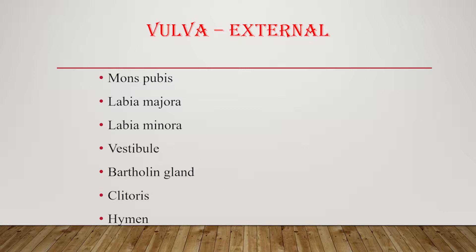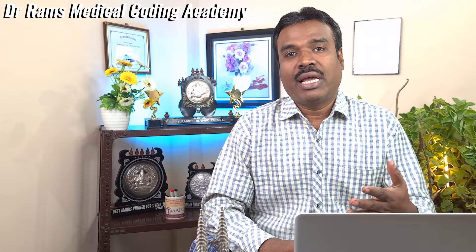We have the labia majora, labia minora, the clitoris, the vaginal introitus, hymen, and Bartholin's glands. What is the pubic mound? The word pubic should make you think of the symphysis pubis. It is a region at which the two pubic bones unite, and there we have a mound of fibro-fatty tissue. This is more prominent in a woman, so we call it the mons pubis.